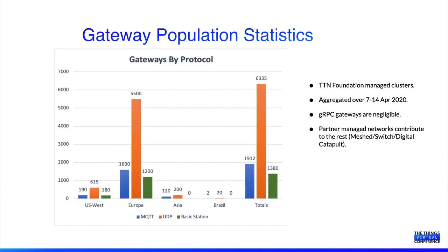Now for some interesting statistics from our public community network. The Things Network Foundation runs four clusters: one in US West, one in Europe, one in Asia, and one in Brazil. This is a breakdown of different gateways per protocol aggregated over the last week. The UDP gateway is the most commonly used, with MQTT and Basic Station catching up. Notably, the European cluster contributes almost 80% of our gateways, meaning it handles a huge volume of traffic with almost 8,000 gateways connected to a single cluster.